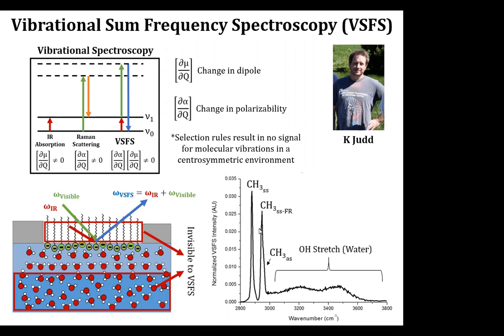So on the right side, just showing an example spectrum, the sharp peaks are the methyl stretches from the methyl groups at the top of the surfactant molecules in the monolayer. And then the OH stretch is the signature of the water molecules, but you're only seeing the molecules that are at the interface and that are oriented towards the charge at the interface.